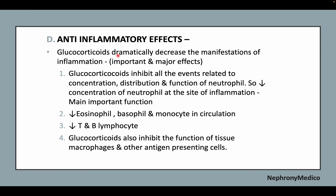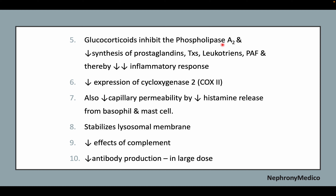Anti-inflammatory effects: glucocorticoids dramatically decrease the manifestations of inflammation. They inhibit all events related to the concentration, distribution, and function of neutrophils, reducing their concentration at the site of inflammation. They also reduce eosinophils, basophils, monocytes, and T and B lymphocytes in circulation, and inhibit the function of tissue macrophages. They inhibit phospholipase A2, reducing synthesis of prostaglandins, thromboxanes, leukotrienes, and PAF. They reduce COX-2 expression, reduce capillary permeability by reducing histamine release, stabilize lysosomal membranes, reduce the effects of complement, and reduce antibody production at large doses.